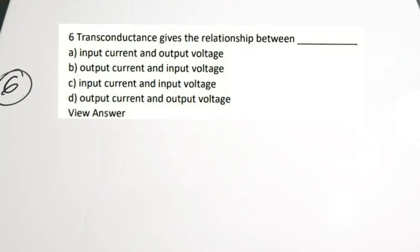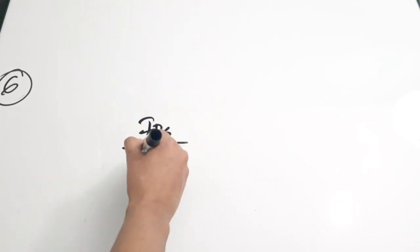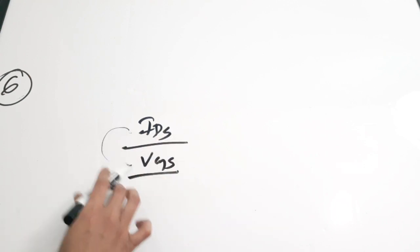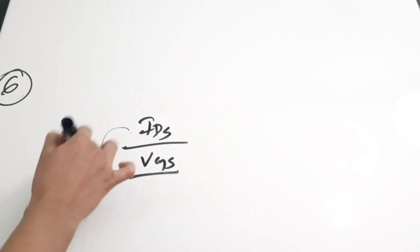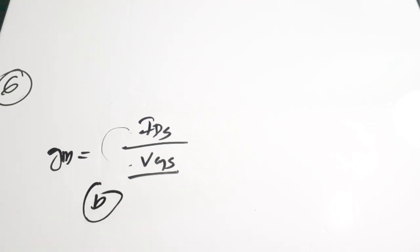Transconductance gives the relationship between dash. Options: A - input current and output voltage, B - output current and input voltage, C - input current and output voltage, D - output current and output voltage. Transconductance expresses the relationship between output current IDS and input voltage VGS. Output current to input voltage is called transconductance GM. Correct answer is option B — output current and input voltage.